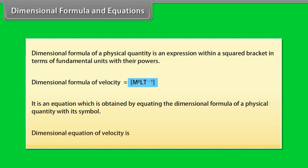Dimensional equation of velocity is V is equal to under brackets M to the power zero L T to the power minus one.